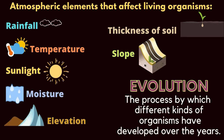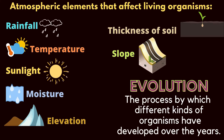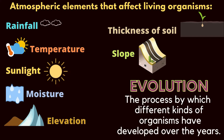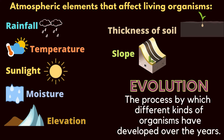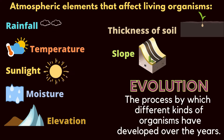The next is elevation. What is elevation? It is the height above sea level. Whether it is very high above sea level or not, that also affects living organisms. Thickness of soil — whether the soil is thick or thin. And slope — slope is when a surface is slanted, or a surface where one end is higher than the other. So these are seven things that affect living organisms.